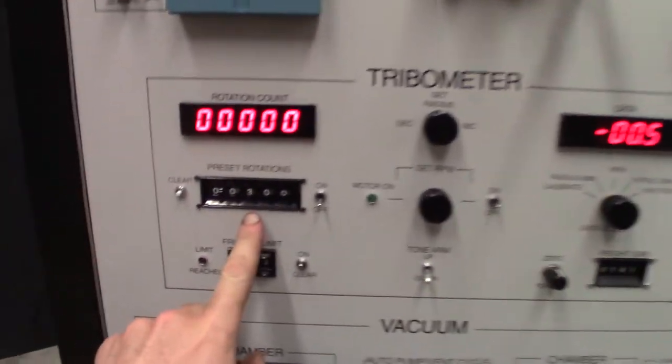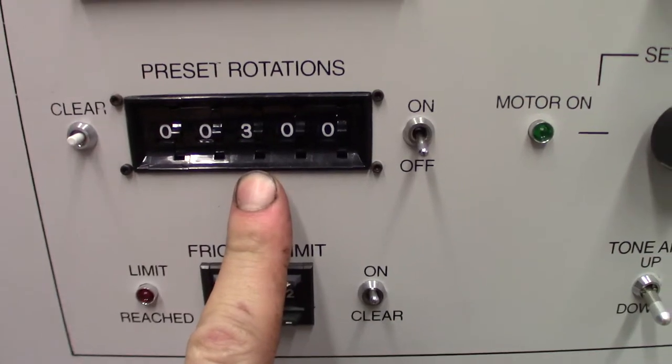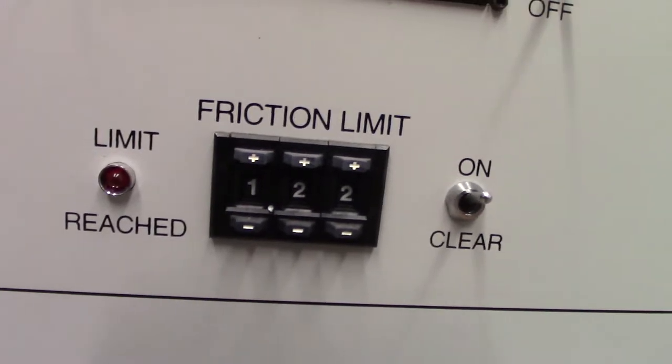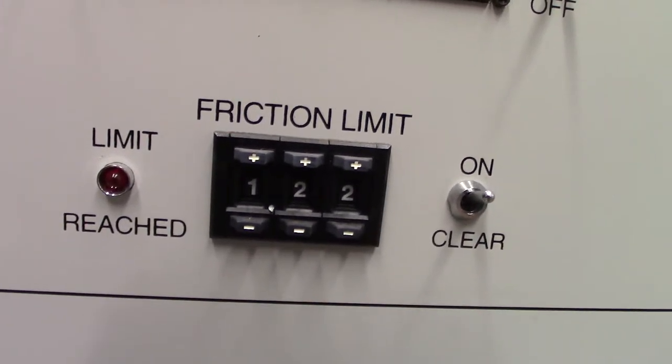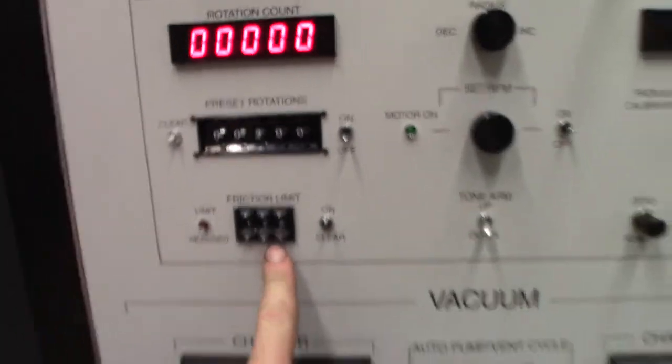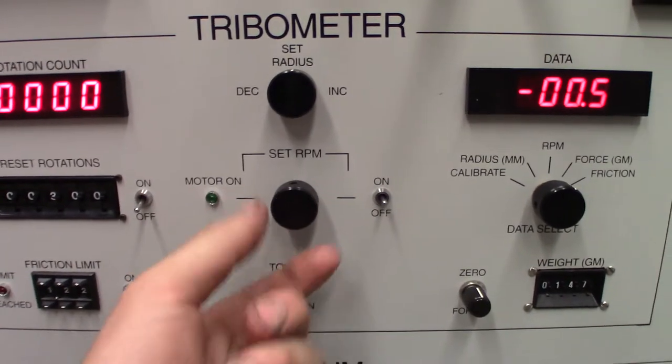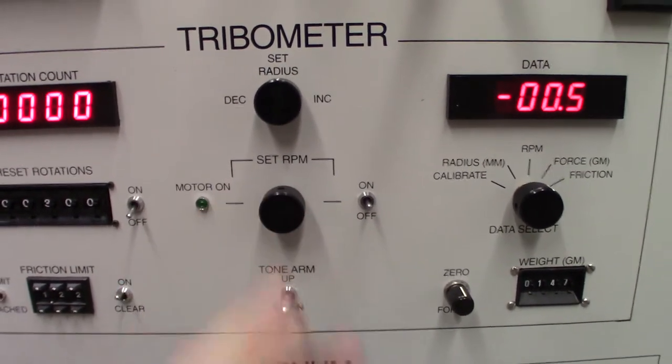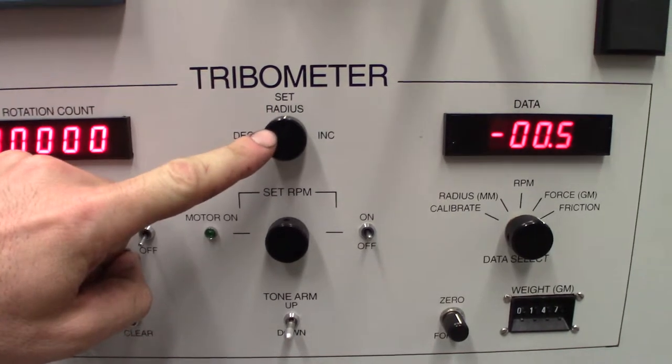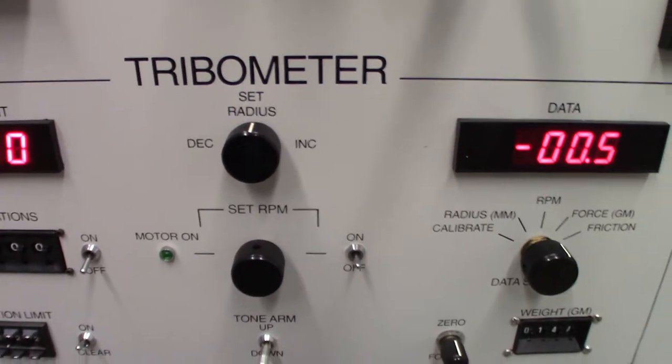So here's the rotation count. When you kick this on, it'll just count how many revolutions and you have a preset right here. You can preset how many revolutions you want and it will automatically turn off. The friction limit will alarm you when it reaches whatever you have set here. The center section here, this is the RPM. It's just a pot that you turn up and down.